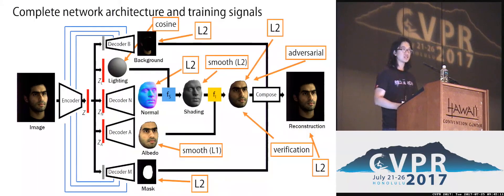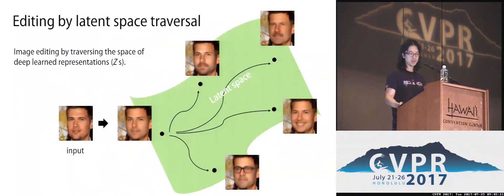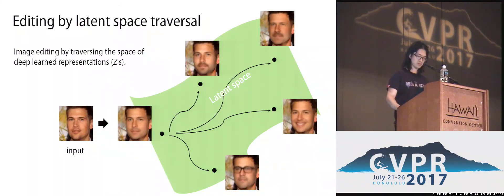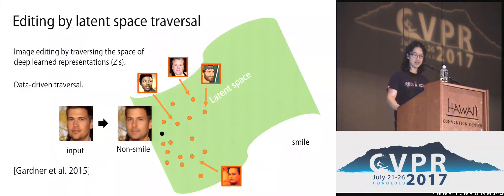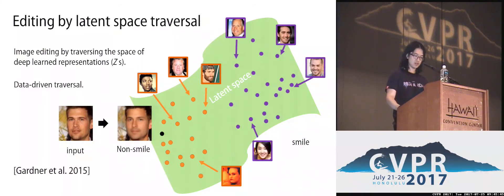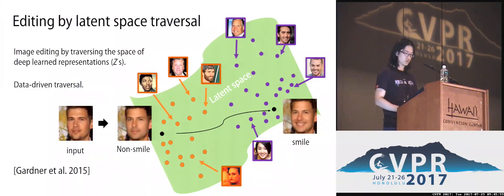We put all of the components together in our end-to-end network. As an application, we can think of image editing operations as traversing the latent space learned by the network. For example, to make a face smile, we first encode the image into the latent representation, sample labeled non-smiling and smiling faces in the latent space, and compute a traversal from the non-smiling cluster to the smiling cluster. At the end, the decoders reconstruct the smiling output.